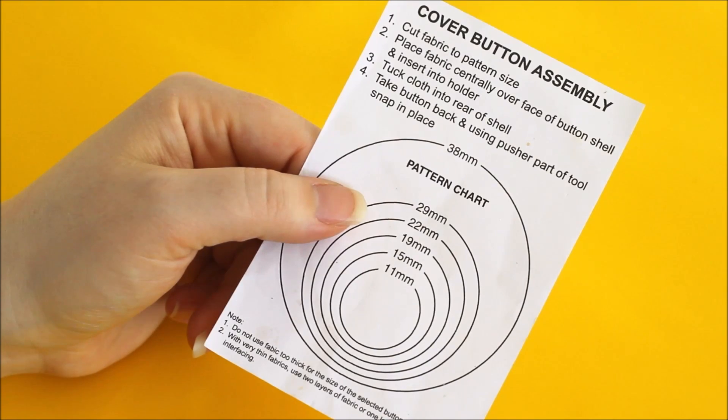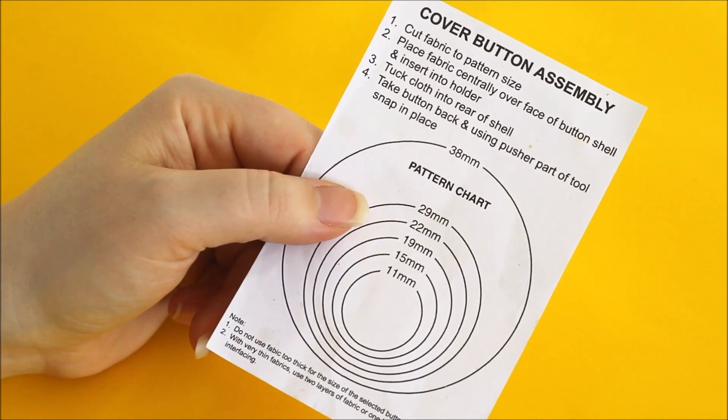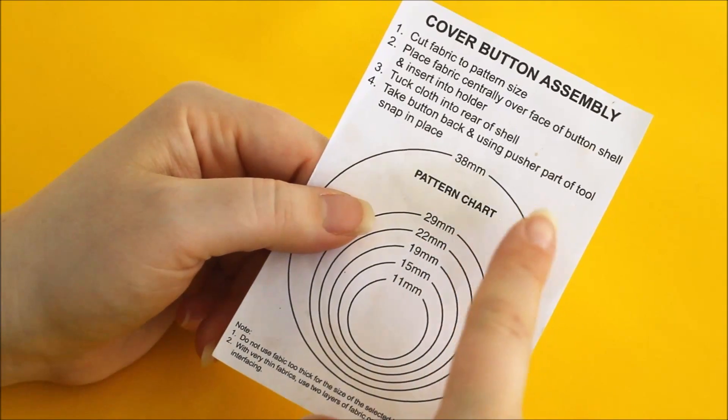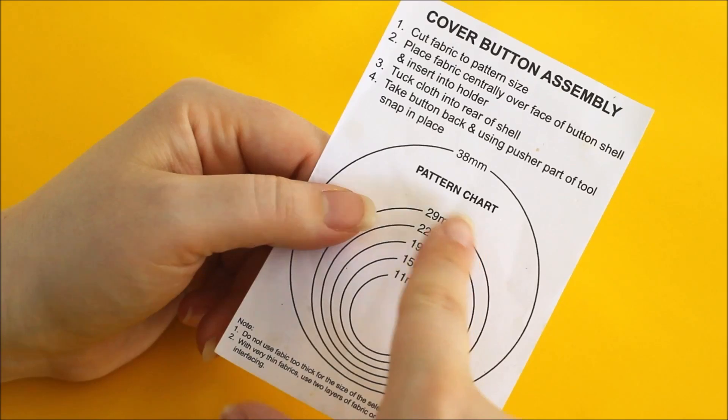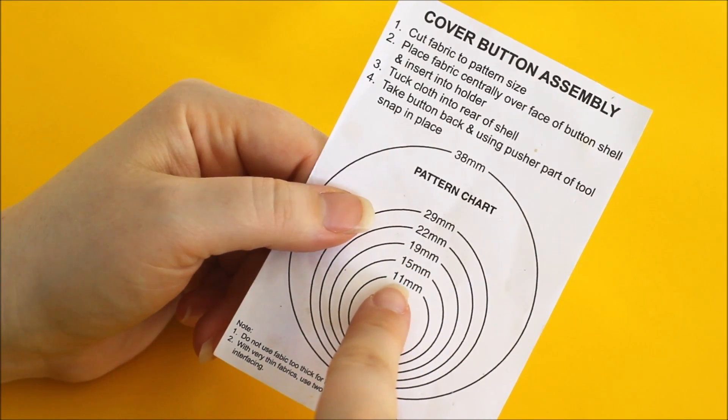Your button tool will also come with a little chart that will show you what size you need to be able to cut out your fabric to make your buttons. So each of the different circles will show you what sizes you need to be able to cut out for. So the number here is the size of the button.